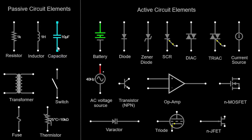A capacitor is a passive component that stores electrical energy in an electric field. It consists of two conductive plates separated by an insulating material called a dielectric. Capacitors are used to store and release electrical energy in circuits and are represented by parallel lines in circuit diagrams. A transformer is a passive electrical device that transfers electrical energy between two or more circuits through electromagnetic induction. It consists of two or more coils (windings) and is used to step up or step down voltage levels. A switch is an electrical component that can open or close a circuit, allowing or interrupting the flow of current.